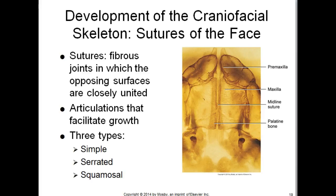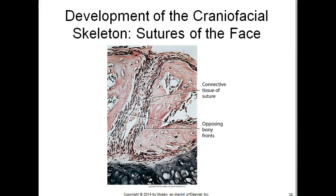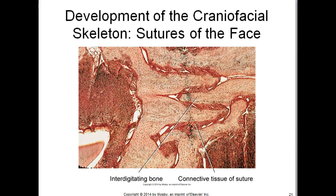A suture is the line of junction or a non-movable joint between two bones, especially of the skull. Sutures are seen in the midline of the palate between the premaxillary and maxillary bones and between the maxillary and palatine bones in the posterior palate. This image shows the histology of a simple suture. Connective tissue and blood vessels are between the opposing bony fronts. Osteoblasts appear along the bony fronts and form bone to provide growth of this suture. Histologically, the connective tissue of the suture and the interdigitation of bone from either side can be visualized.